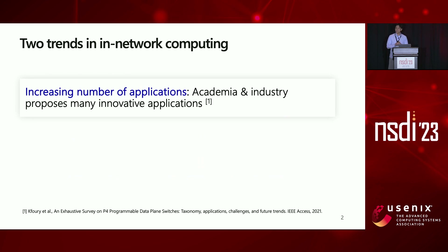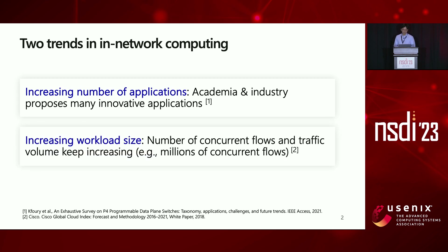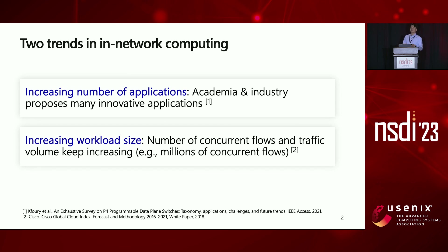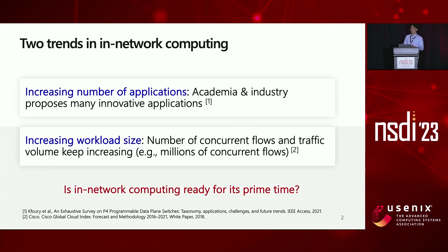There are two key trends in in-network computing. As we saw in recent years of networking and systems conferences, our community continues to propose new and innovative in-network applications running on programmable switches. And the traffic workload size that each app needs to serve is also increasing, especially in terms of number of flows and traffic volume. So it looks like the popularity and demand for in-network computing keeps growing, but is it really ready for its prime time?